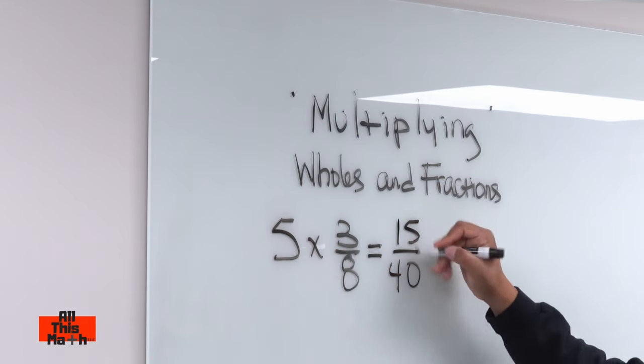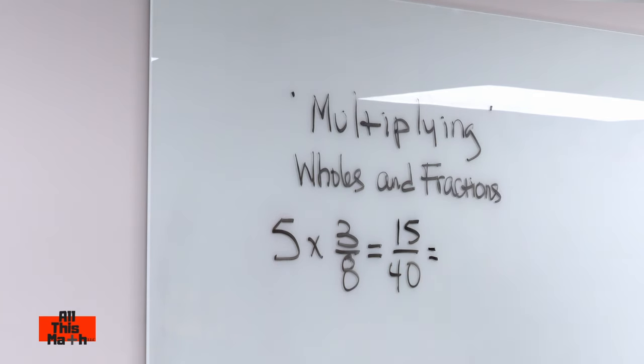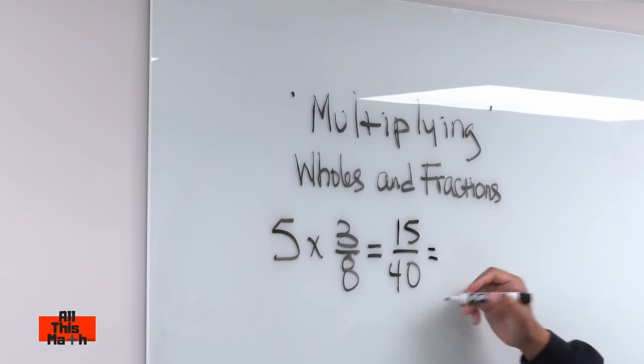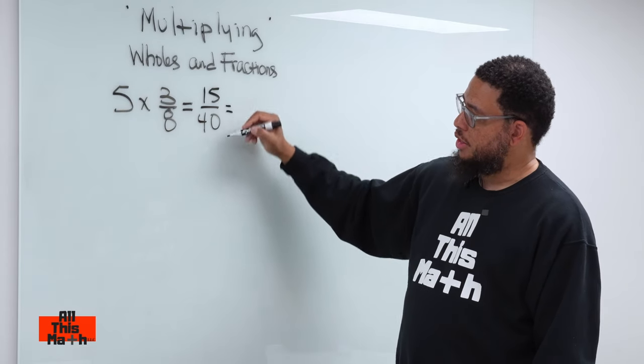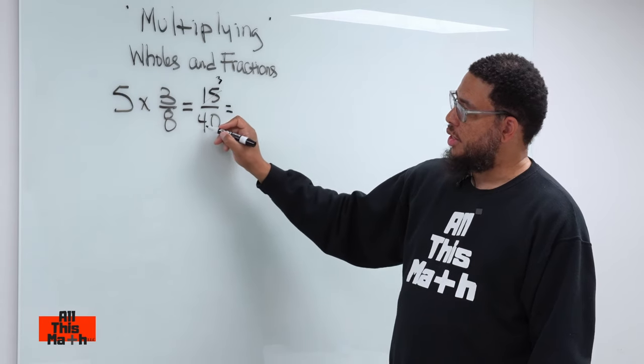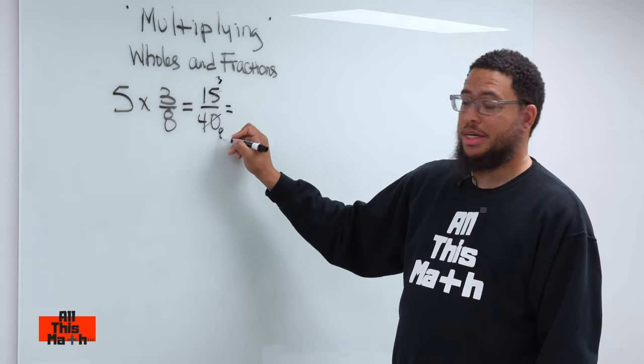But think about this. If you have 15 over 40, if we reduce or simplify this fraction you think of the common factor between 15 and 40 which would be the number five because five can divide evenly into each of these numbers. So if I do 15 divided by five that becomes three and 40 divided by five that becomes eight.